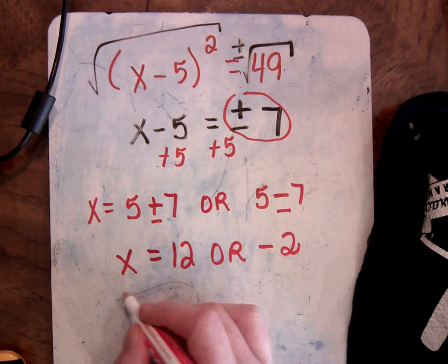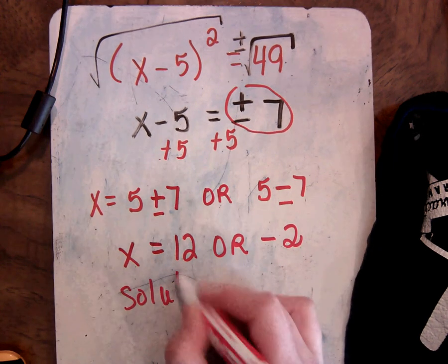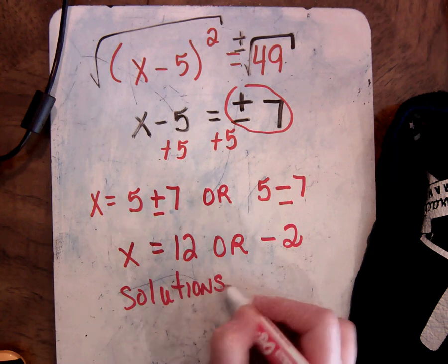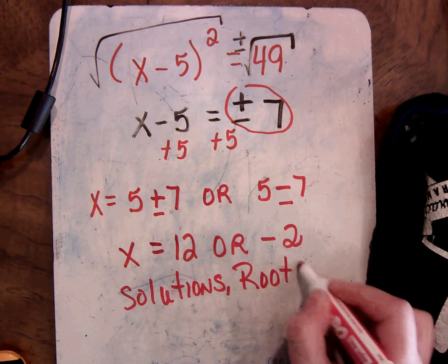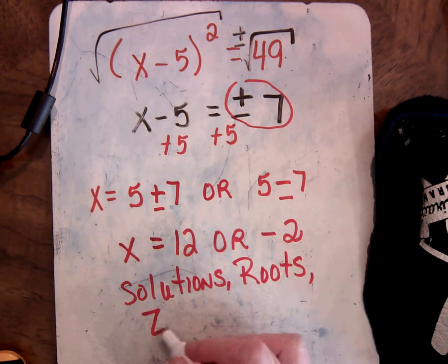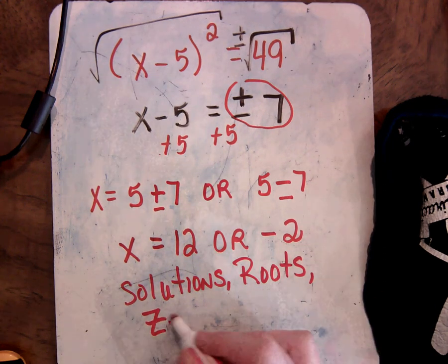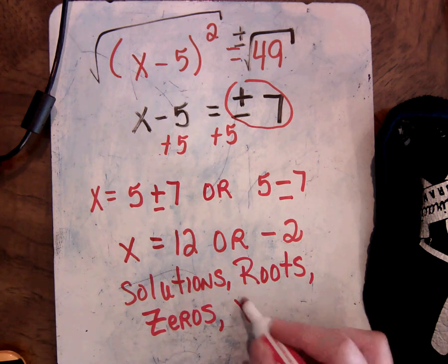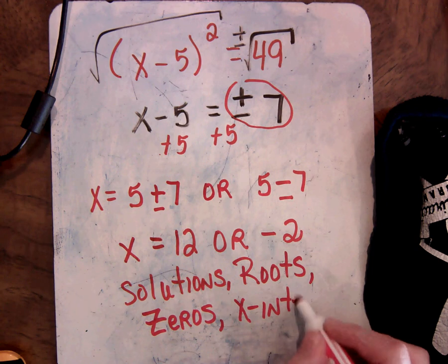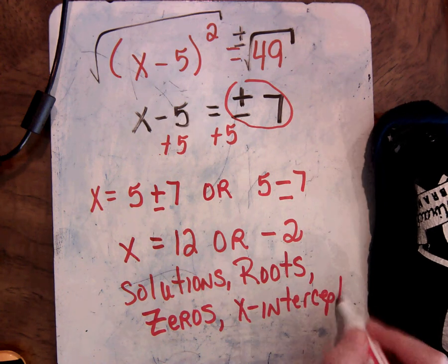Just a reminder, these are our solutions. Think about what are the other names. Solutions. Roots. Seeing if you're thinking. Zeros. And what's the last one? x-intercepts. Okay, so that's another example.